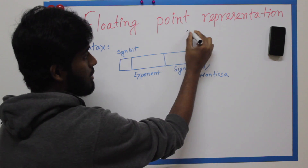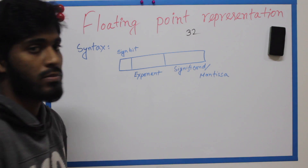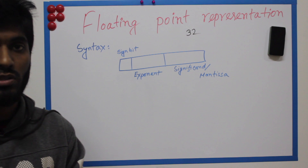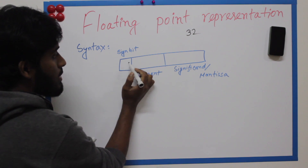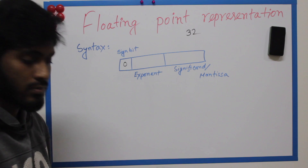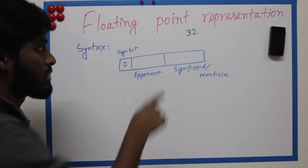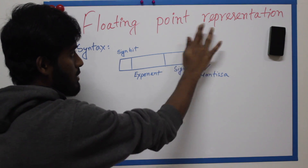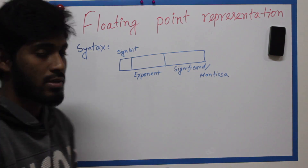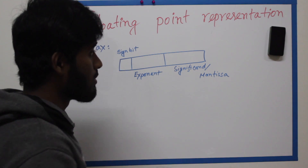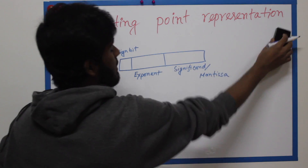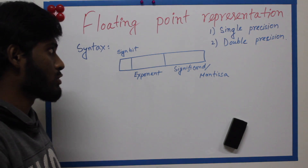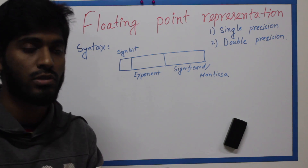When we have the number 32, this number is positive or negative? Technically, this number is a positive number. A positive number has sign bit 0. So if it is negative, then it is 1. We have two types of representation: single precision and double precision.